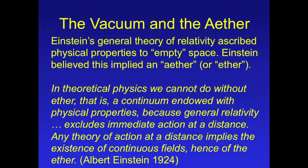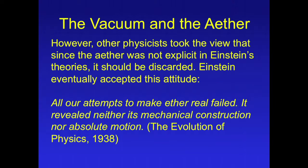Einstein's general theory of relativity ascribed physical properties to empty space. Einstein believed this implied an ether, which would be a substance that carries waves. However, other physicists took the view that since the ether was not explicit in Einstein's theories, it should be discarded. Einstein eventually accepted this attitude.